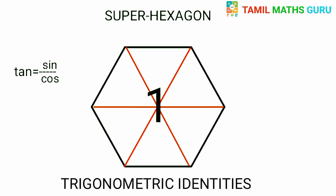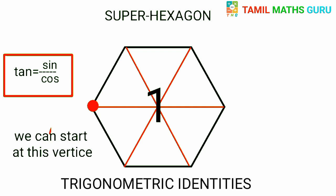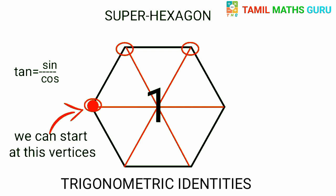We choose one formula. The formula is tan is equal to sin by cos. Now, how do we use the starting point? If we choose this vertex, we choose this arrow mark.